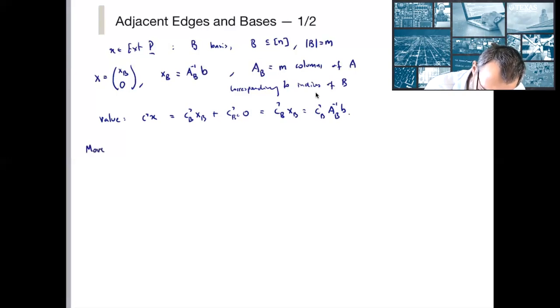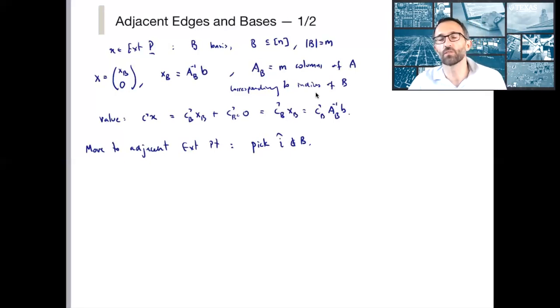So I'm going to move to an adjacent extreme point. How am I going to do that? I'm going to pick some element, i hat, that is not in B. And I'm going to put that in my new basis. And now I'm going to see which of them, this is not my super naive solution, because we're going to see that we're going to naturally learn which of the elements of B is going to exit. But we're still going to improve this choice going down the line.